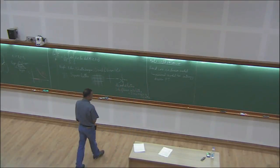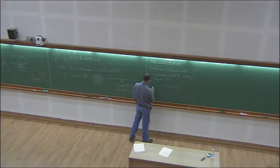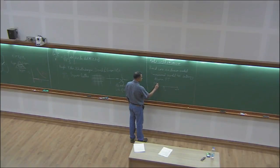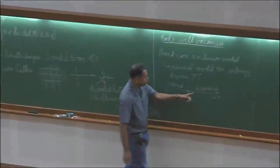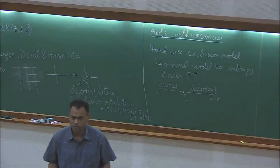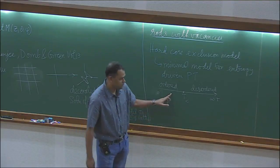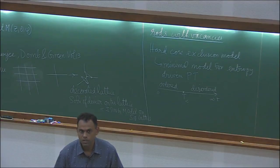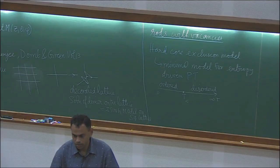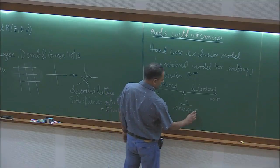Hardcore exclusion models are minimal models for entropy-driven phase transitions. In the Ising model at low temperature, the ordered phase has lower free energy because the energy is lowered — that is an energy-driven transition. Now consider a 3D box with hard balls: if I increase density high enough, they start forming a solid. This liquid-to-solid transition does not require any attractive interactions; it can be driven purely by repulsive interactions.